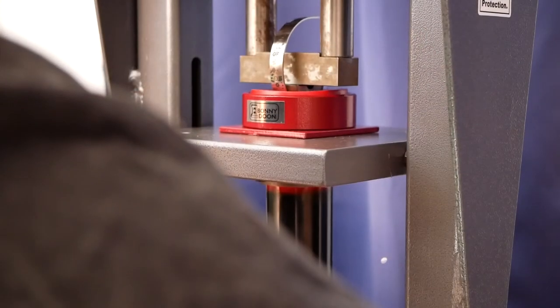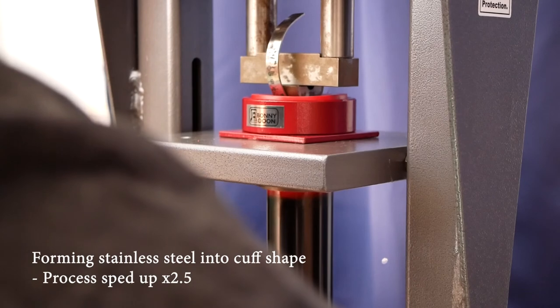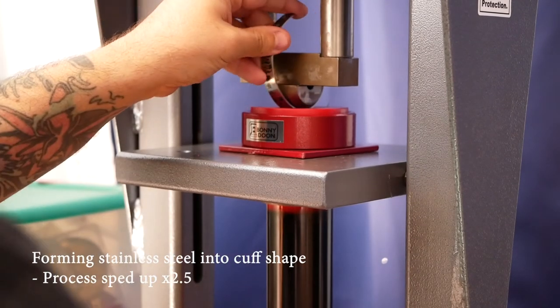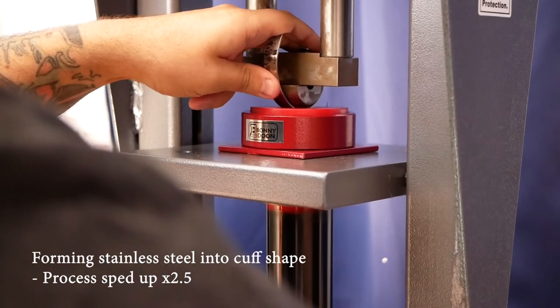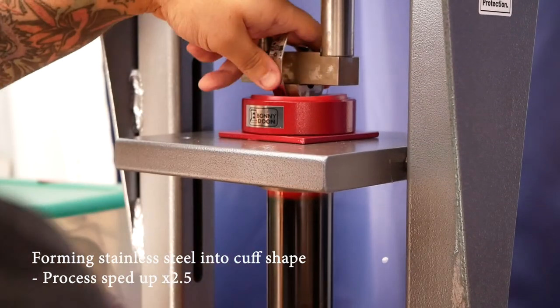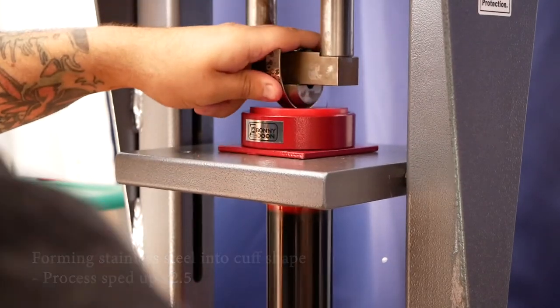We also engrave the inside. Once we're done with that, we take it to our Bonnie Dune 25-ton electronic press and we form it on a domed plate for a perfect fit and a perfect curved shape.